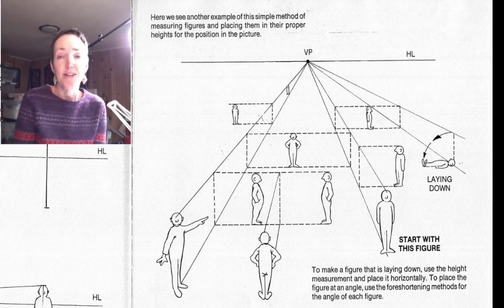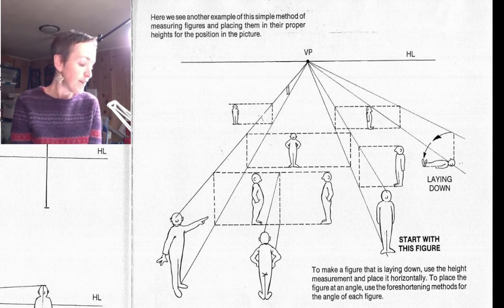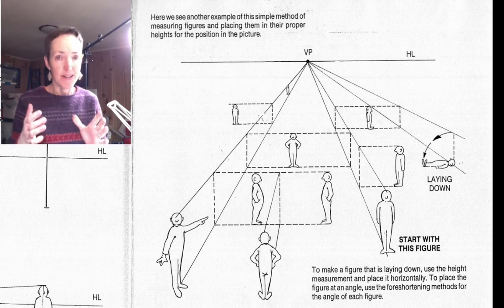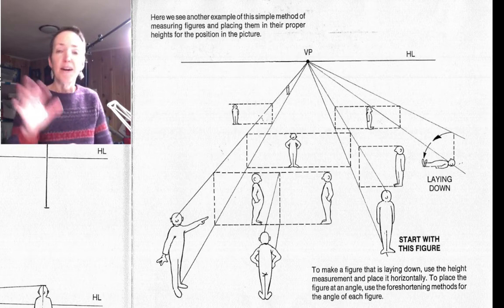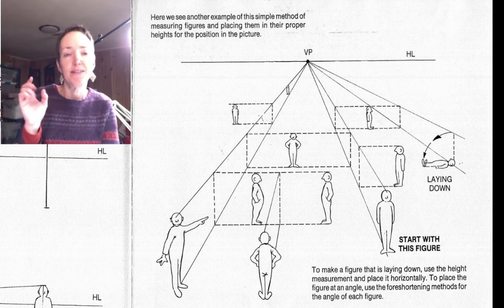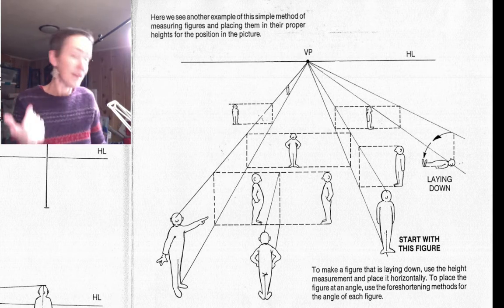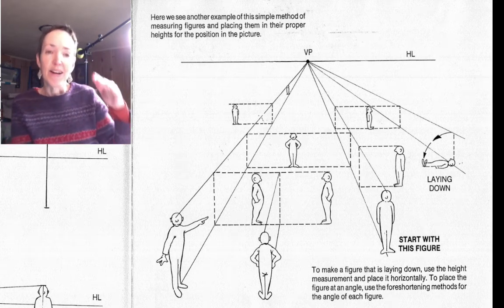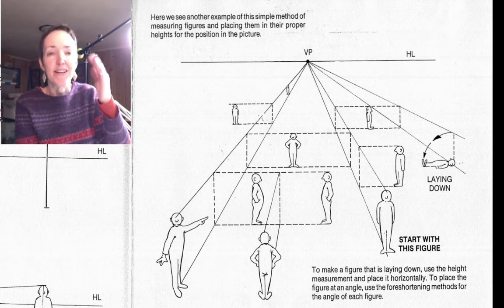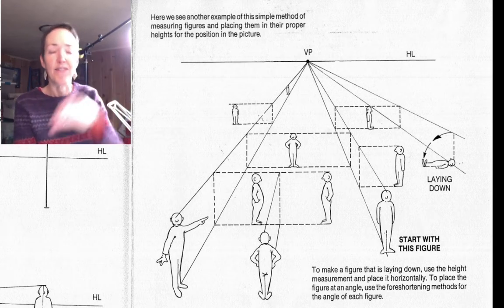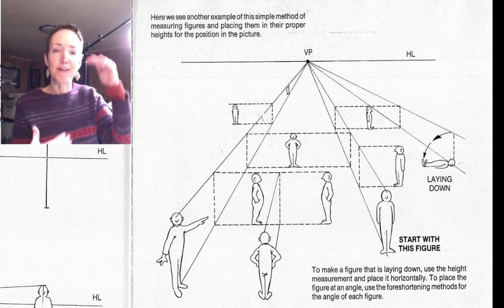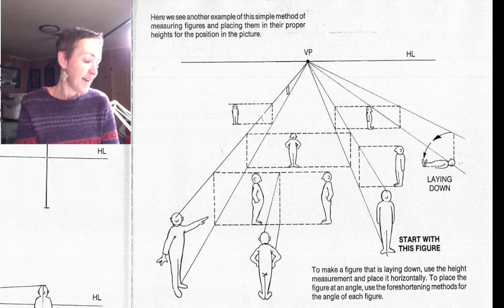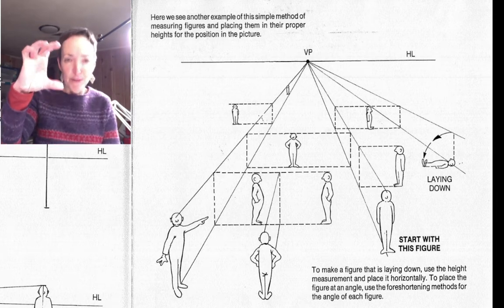We're going to be adding furniture in the interior of our house. To do that, we really need to be thinking about how large a person would be at any point in that room. Once you establish how large the person should be against the back wall — which is pretty easy because we know where the eye level is — you can lightly sketch in a little stick figure as a reference for how large a person would be against the back wall.